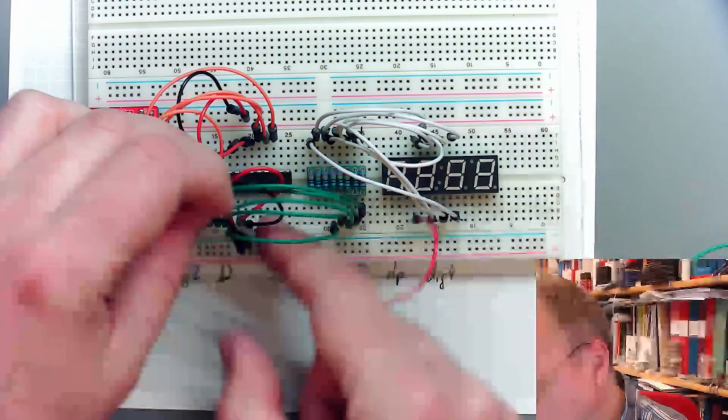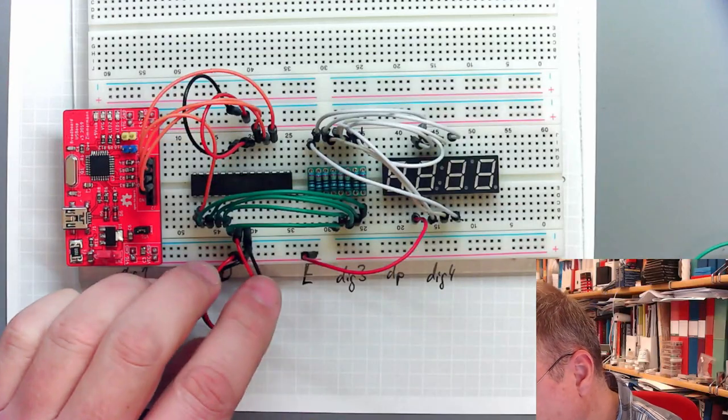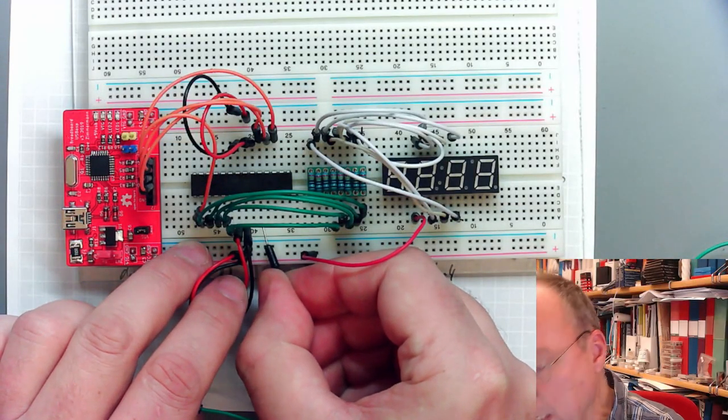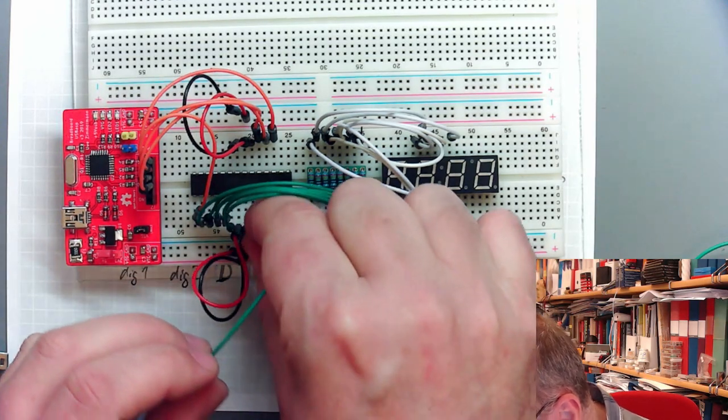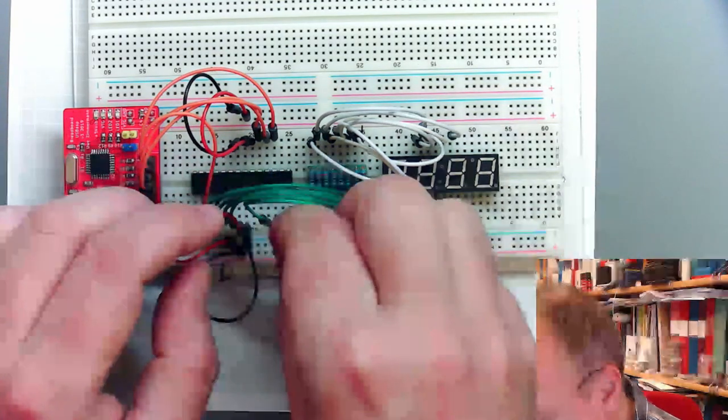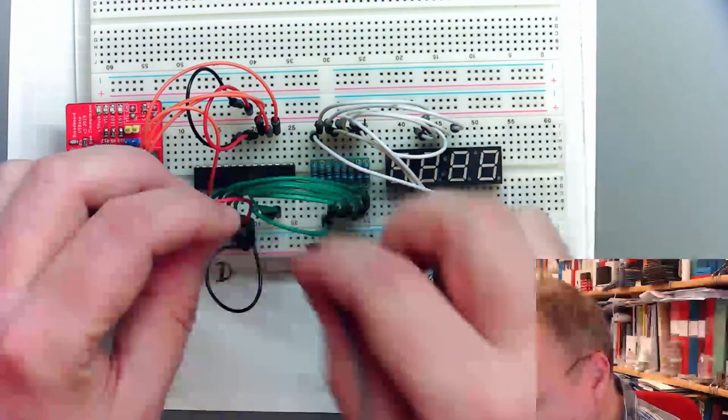Then come the two supply pins from our microcontroller, then come the two pins from port B, and then comes the next pin of port D. And there are actually two more to connect.